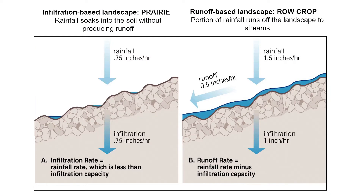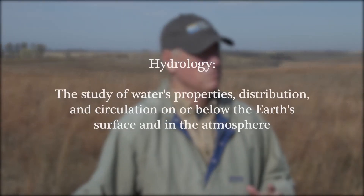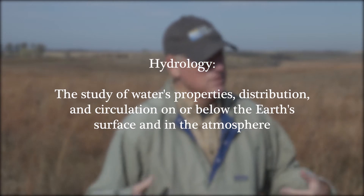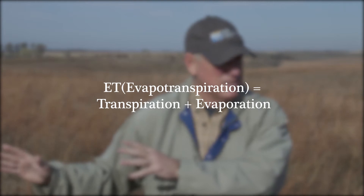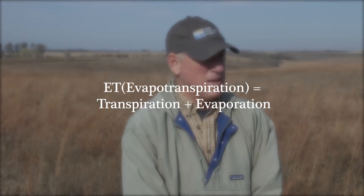With most of that water running off, or soaking into the ground with no transpiration by vegetation, we see the hydrology completely different between these two landscapes. We've completely changed the water balance. ET is greater in prairie than it is in row crop lands, and consequently we have less discharge and less runoff over here in prairie than we do with the row crop land cover.